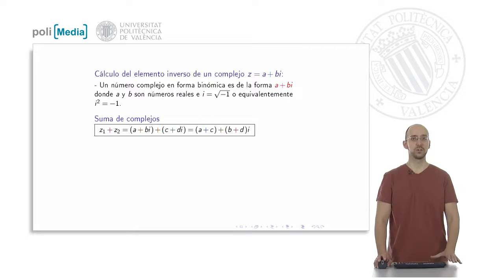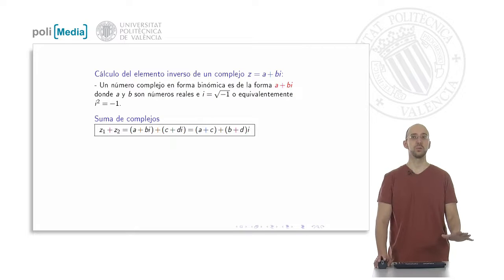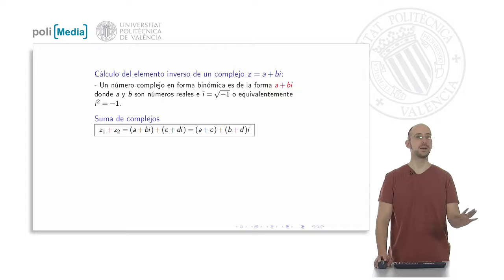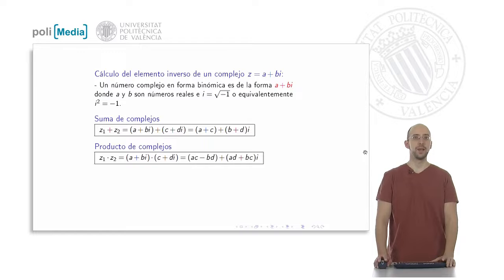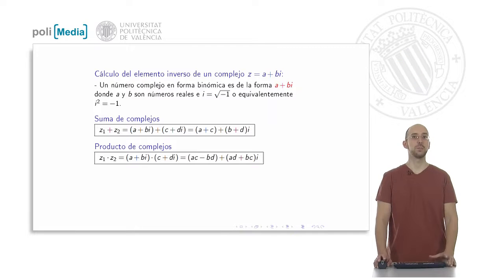We would also like to review the addition of complex numbers. The addition is calculated like this: if we have two complex numbers to add, we add the real parts on one side and the imaginary parts on the other side, and the solution is another complex number, as you can see on the transparency.